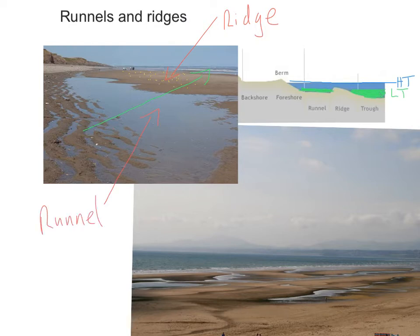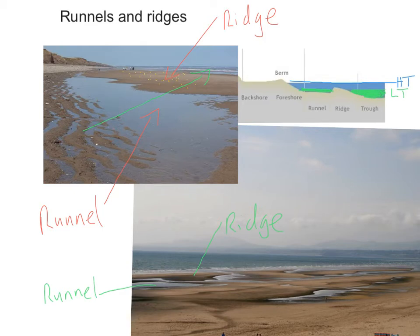Runnels are natural shallow ditches of water between a ridge and the beach, and we can see these ever more clearly on the photograph below. We have a well-formed ridge of sand, and trapped between the ridge and the beach, a runnel. On the diagram, where I've highlighted HT for high tide and LT for low tide, the ridge and runnel are only visible at low tide. Once high tide comes, they will be completely covered.